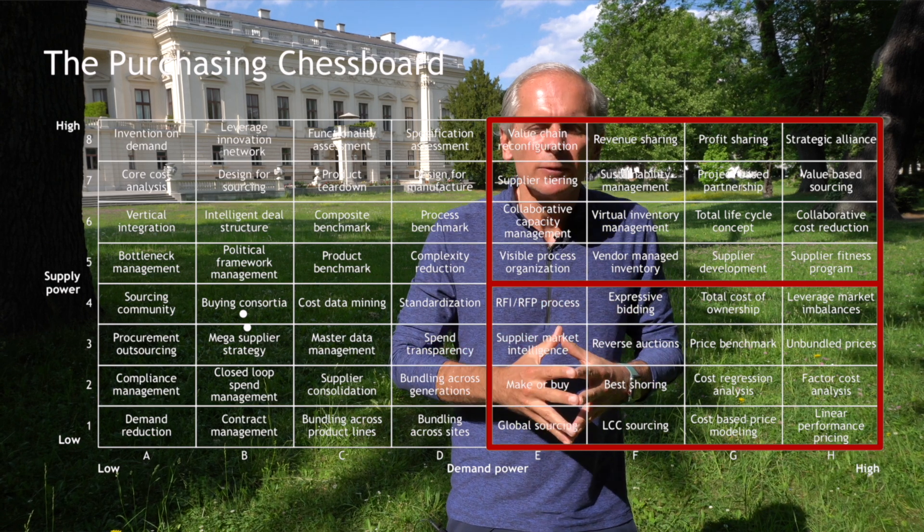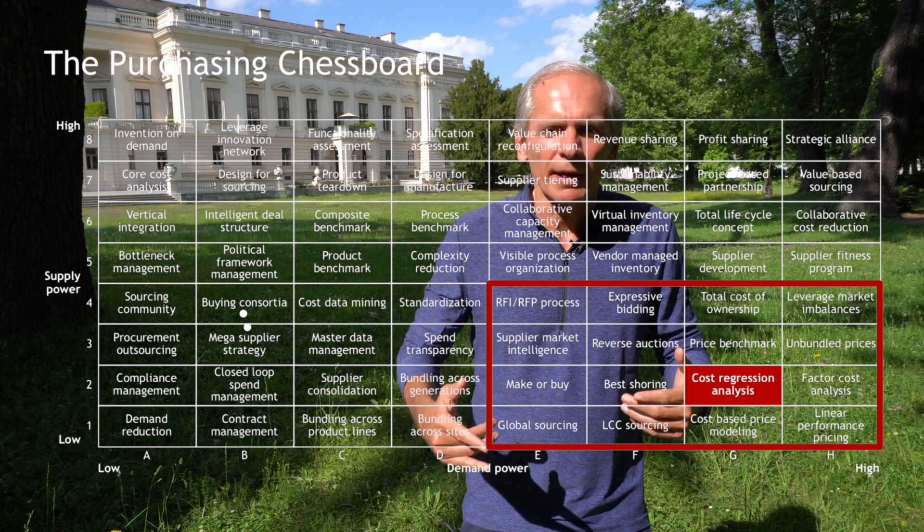But even in the right half of the chessboard, we still have 32 methods, so this still feels complex and requires a lot of reading and attention span. So let's boil it down to just one representative method per remaining quadrant. The bottom right quadrant is where you enjoy high demand power and you can choose from many suppliers with low supply power. The method that best represents this quadrant is G2 cost regression analysis.